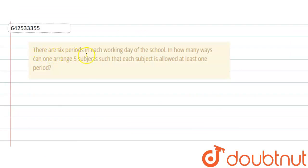There are six periods in each working day of the school. In how many ways can one arrange five subjects such that each subject is allowed at least one period?